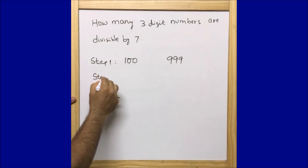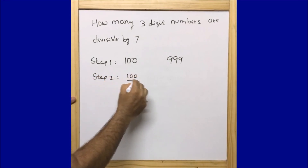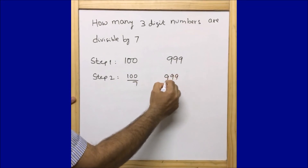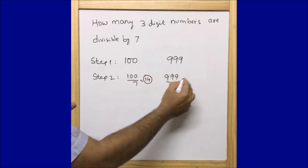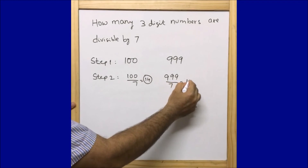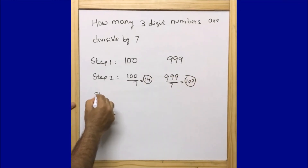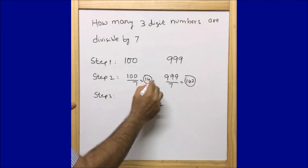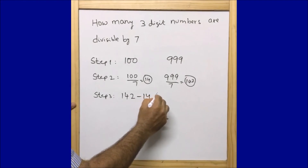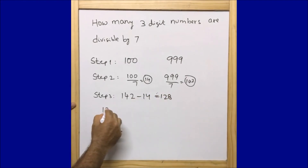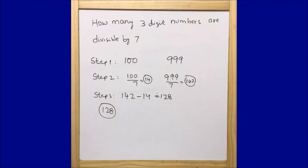Step two: we divide 100 by 7 — I get 14 in the quotient. And 999 divided by 7 gives 142 in the quotient. Step three: subtract 14 from 142 — that is 128. So there are altogether 128 three-digit numbers divisible by seven. Hope you understood — this calculation is super easy and you can find out within seconds.